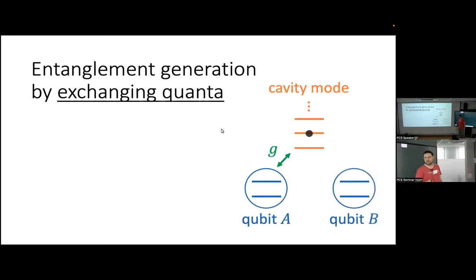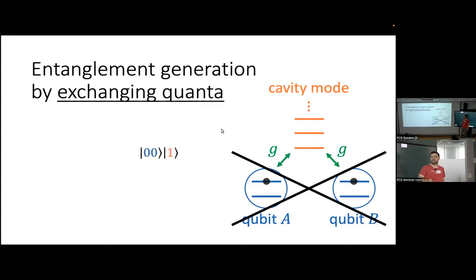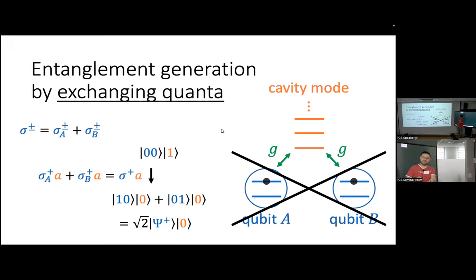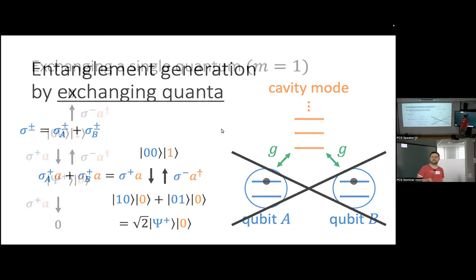With two qubits, we cannot transfer this excitation to both of them at the same time because we have just a single quantum. But we can create a superposition of such states. The Hamiltonian leads to creation of a superposition of two excited qubits. If you now trace out over the cavity mode, we can get an entangled state because this is one of the Bell states. This Hamiltonian provides coupling in this subspace with a single photon.